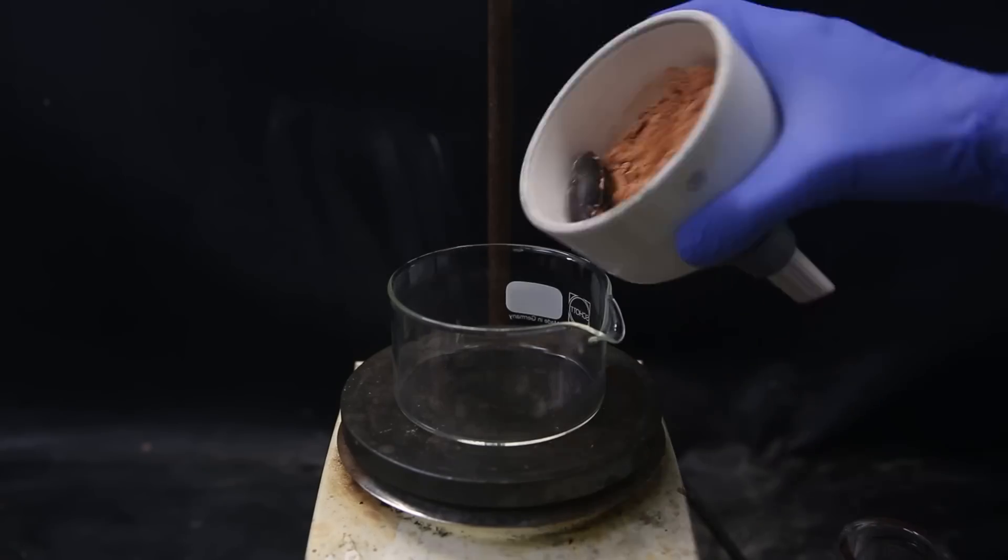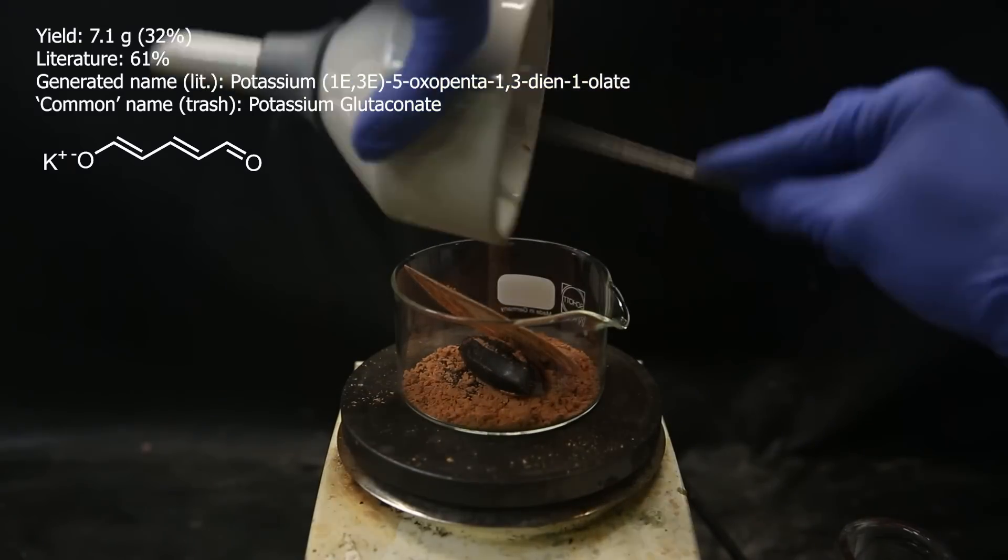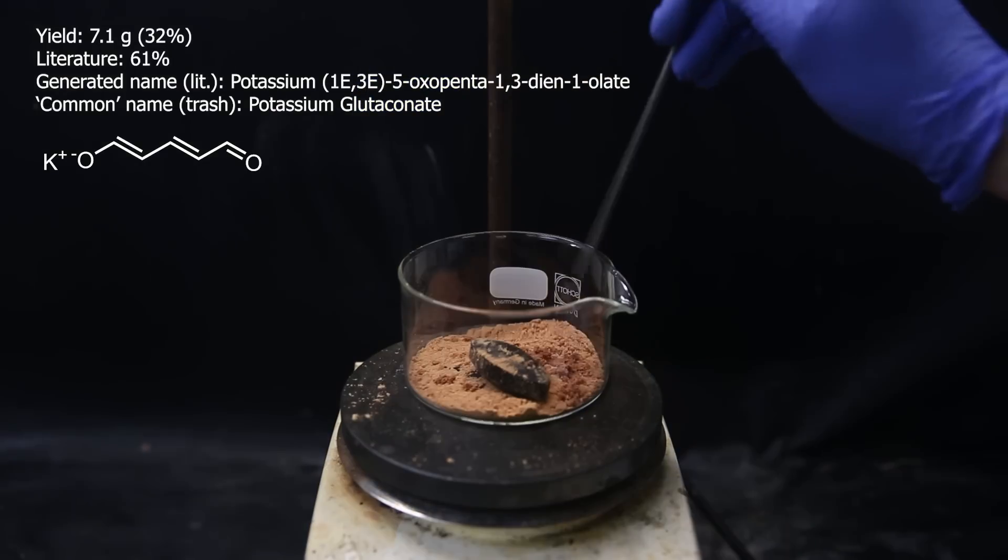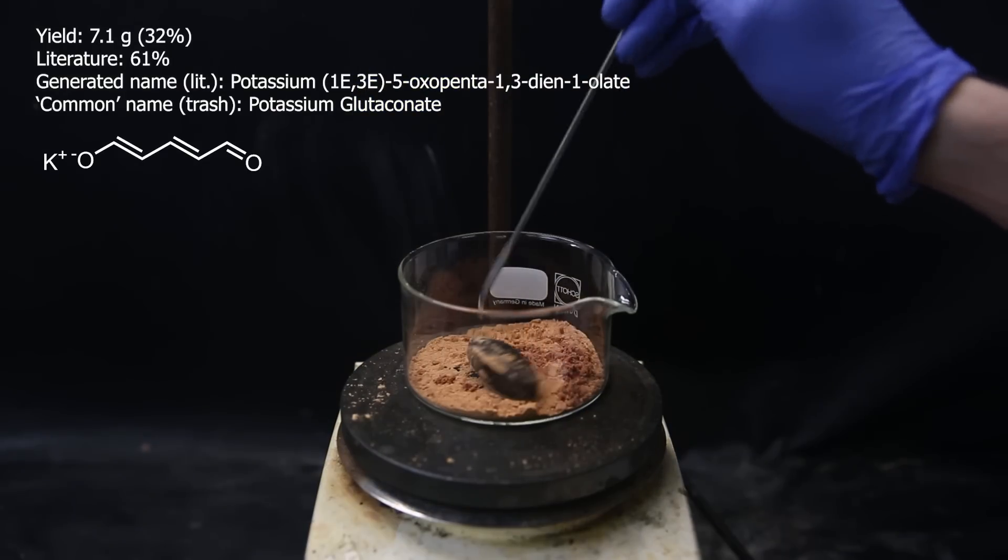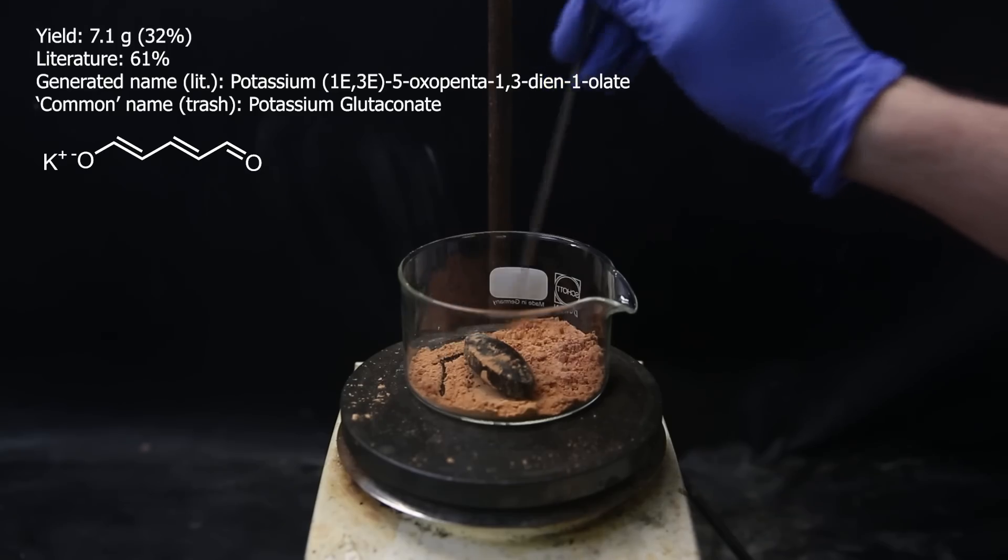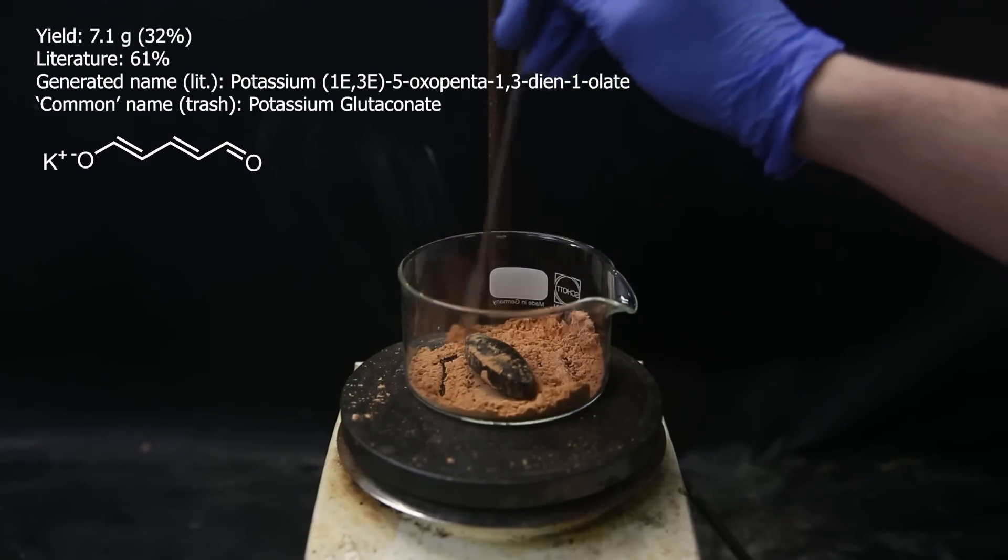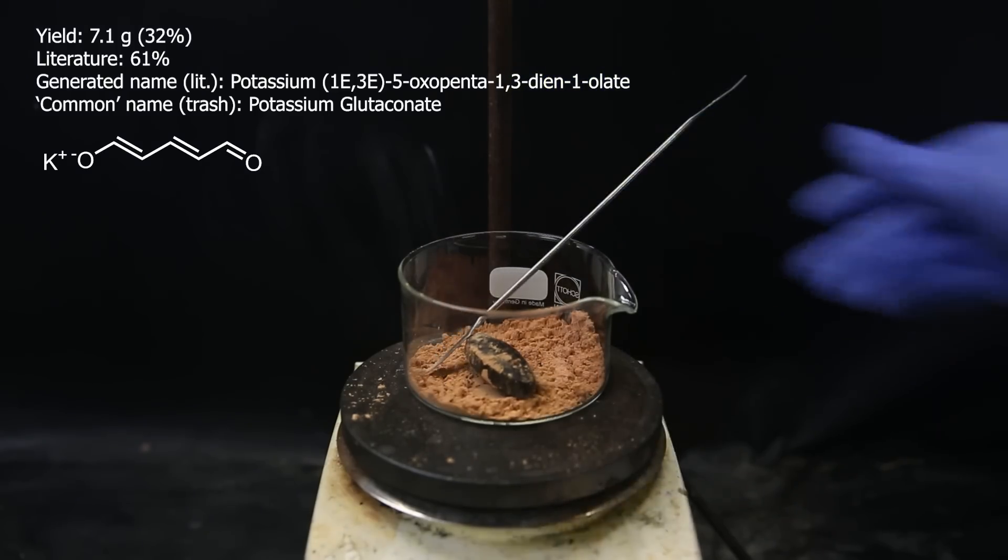I move it all to this dish, and the yield turned out to be 7.1 grams, which is 32%. This is about half compared to the literature. Maybe it's because I had to add water to make it stir before. They also mention that the quality of the pyridine-sulfur trioxide complex is important, and I use the technical grade, which also lowers the yield. Overall, it isn't too bad, all things considered.